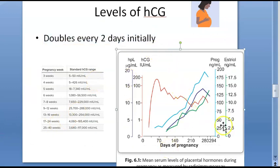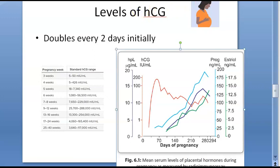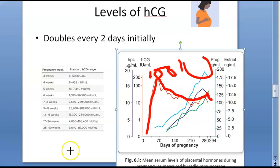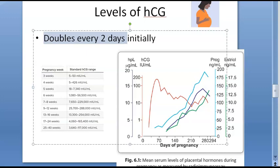Looking at the graph — focus only on the red line — the x-axis shows days of pregnancy and the y-axis shows HCG levels. HCG rises steeply, doubling every two days initially, reaching around 100 international units at approximately 12 weeks. After that it falls and remains relatively stable, with a slight peak around 32 weeks. If there is a doubling of HCG levels, you can be confident it is a healthy pregnancy.